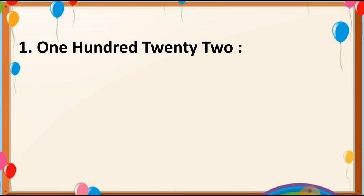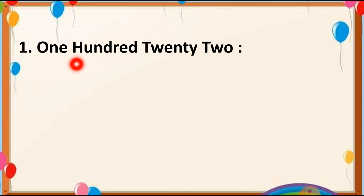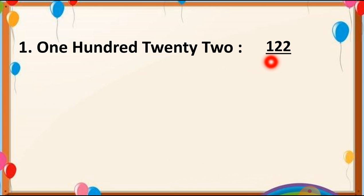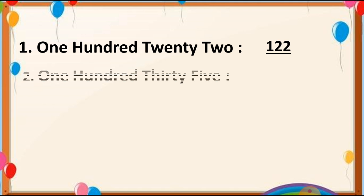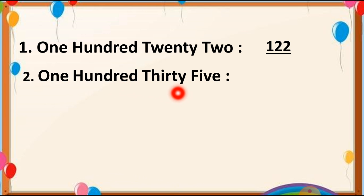Here is one question. Let us read it first: 122. We have to write down this in numeral form. For 100, we write 1 at the 100's place and 22 after it — so we write 122. The number 2 is 135: at the 100's place 1 will come and then 35, so we write 135.